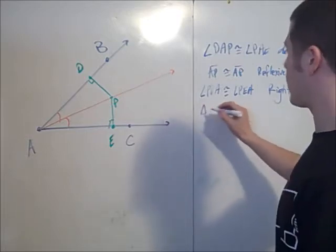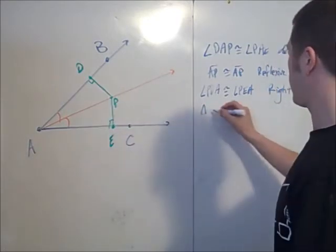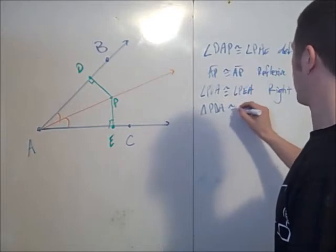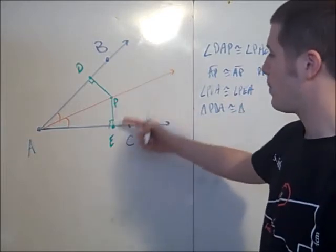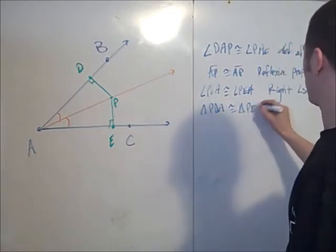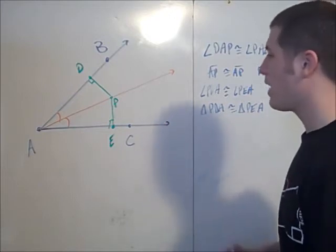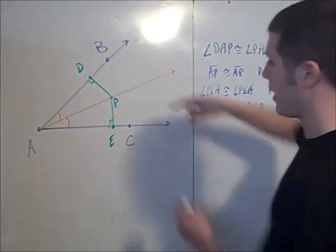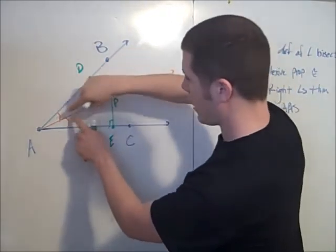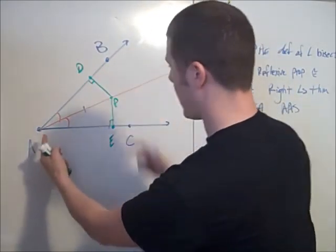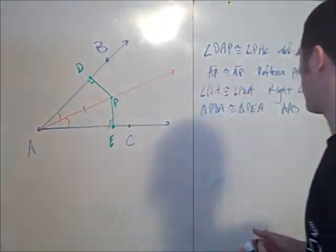This gives us triangle PDA congruent to triangle PEA by angle-angle-side. We have angle-angle and then side AP is congruent to itself.